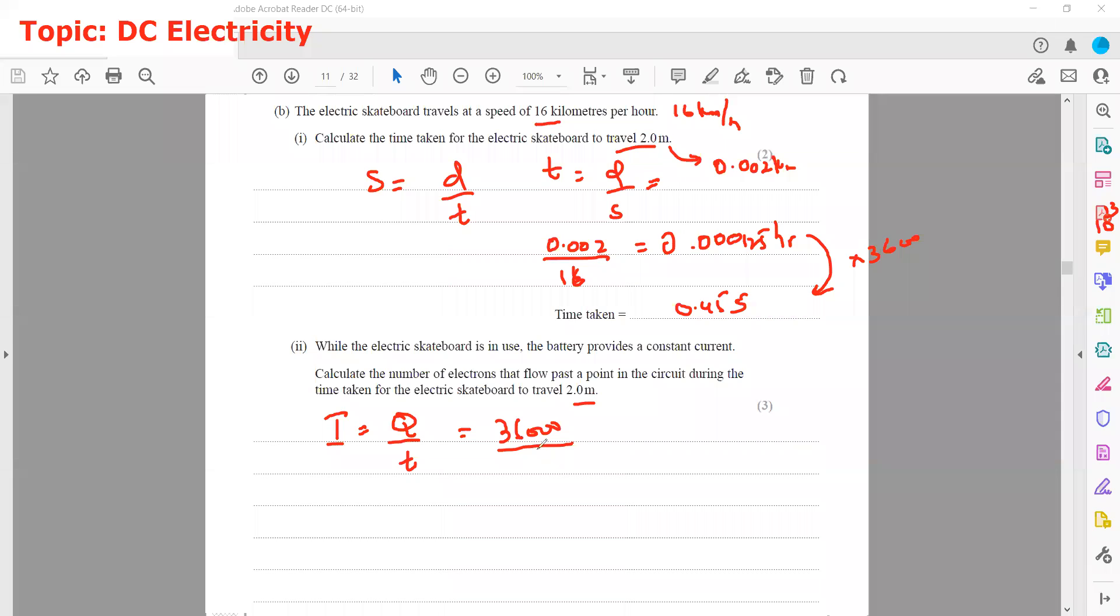In the first part, the charge was 36,000 coulombs and it was 40 minutes. We convert to seconds and find how much current will flow. This means 15 amperes will flow. As I mentioned, the current is constant, so this 15 amperes remains the same.